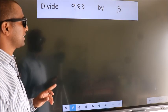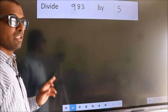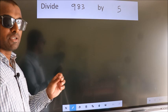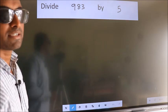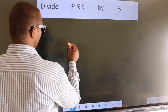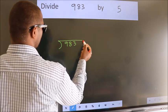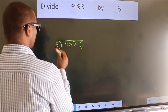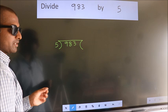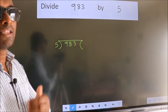Divide 983 by 5. To do this division, we should frame it in this way: 983 here, 5 here. This is your step 1. Next.